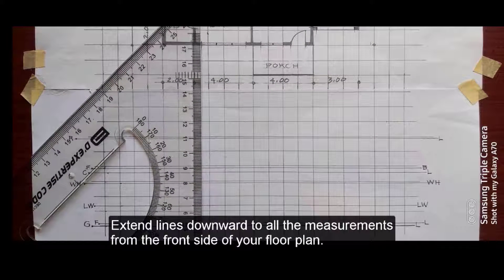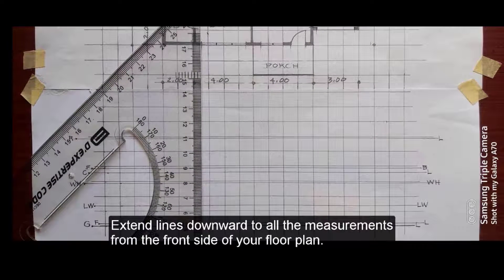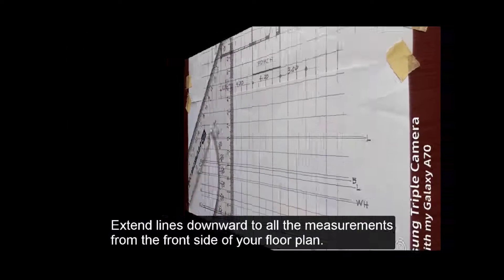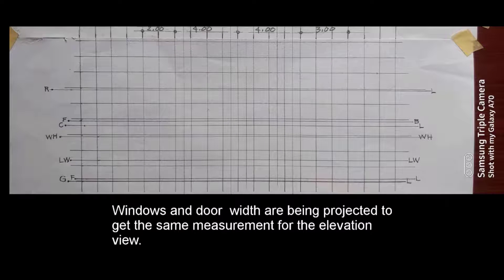Extend lines downward to all measurements from the front side of your floor plan. On your floor plan, windows and door width are being projected downward to get the same measurement for the elevation view.